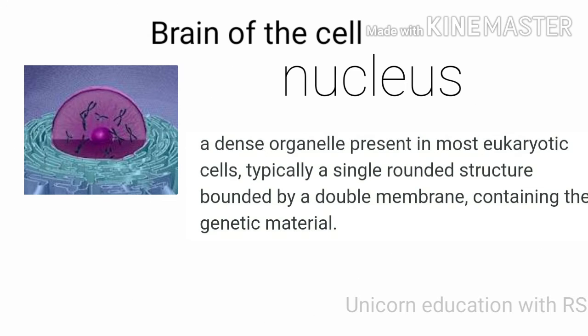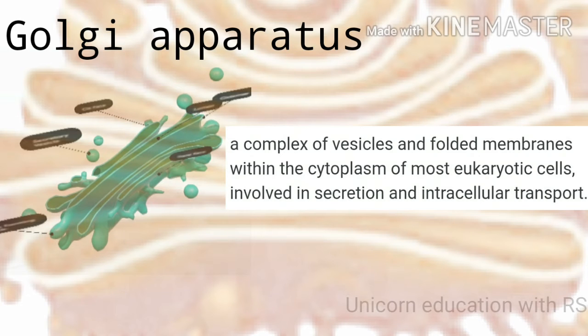The nucleus is a dense organelle present in most eukaryotic cells. It has double membrane containing the genetic material. The Golgi apparatus is a complex of vesicles and folded membranes. It involves in secretion and intracellular transports.